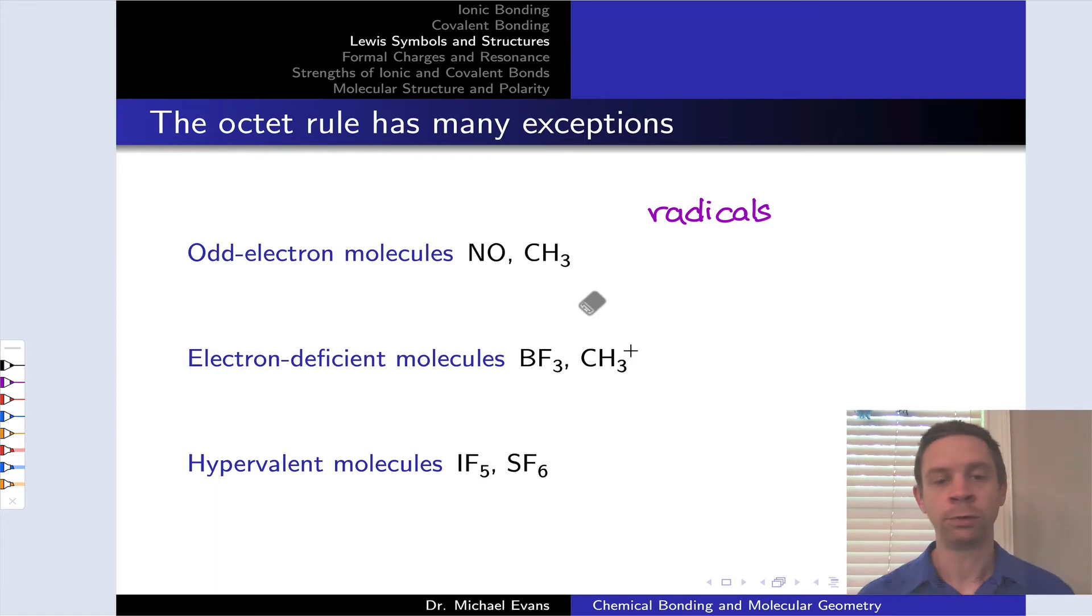For example, if we look at the Lewis structures of NO and CH3, we'll see these single dots sitting on the nitrogen atom and the carbon atom, and these are the radical electron or unpaired electron. If we count up the total number of electrons around each atom, we'll realize that that number is odd.